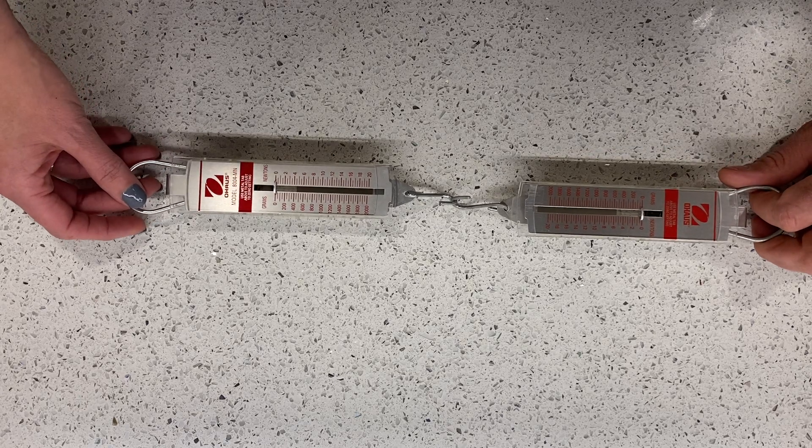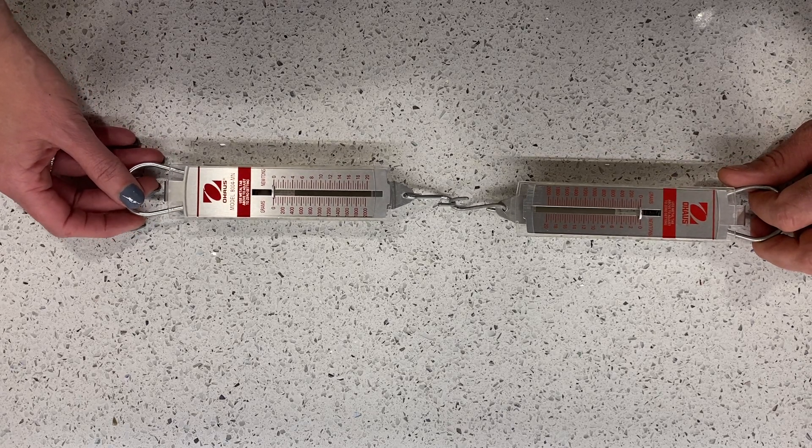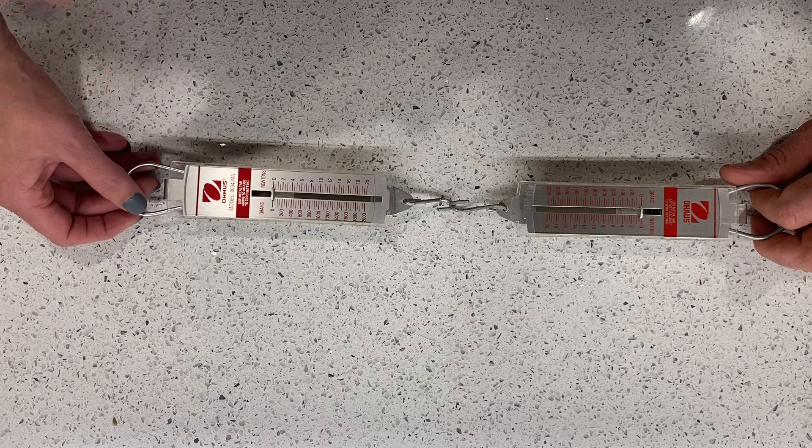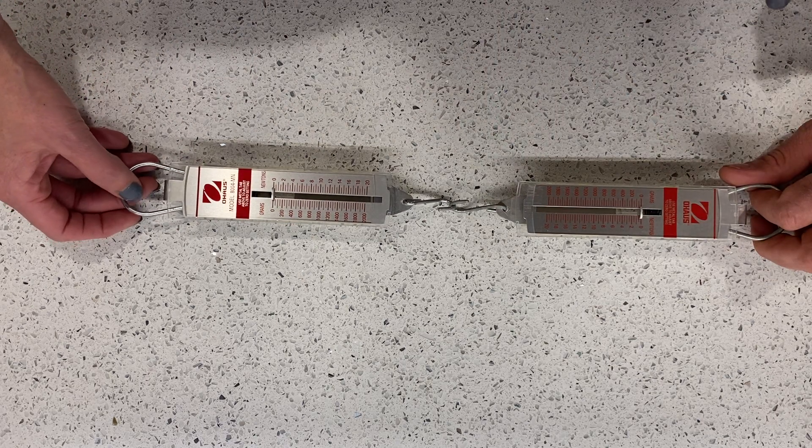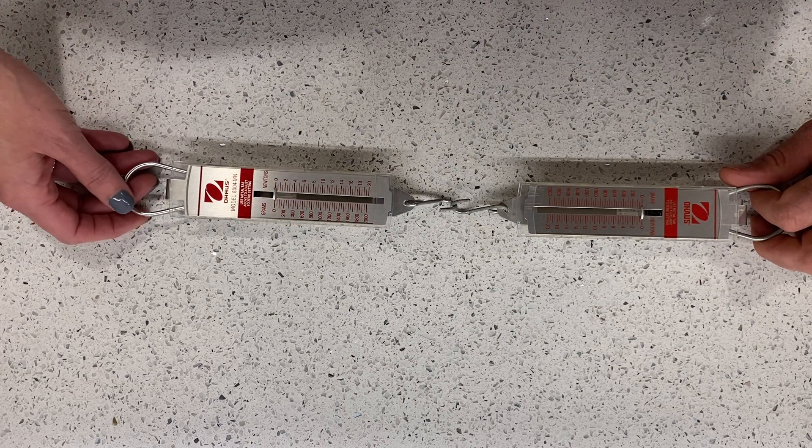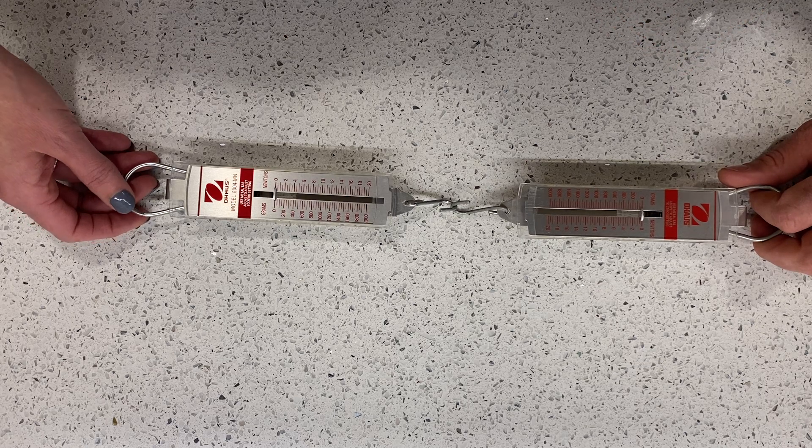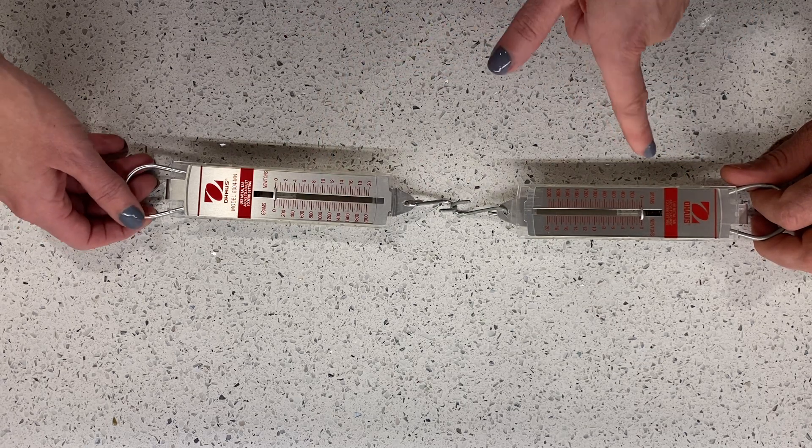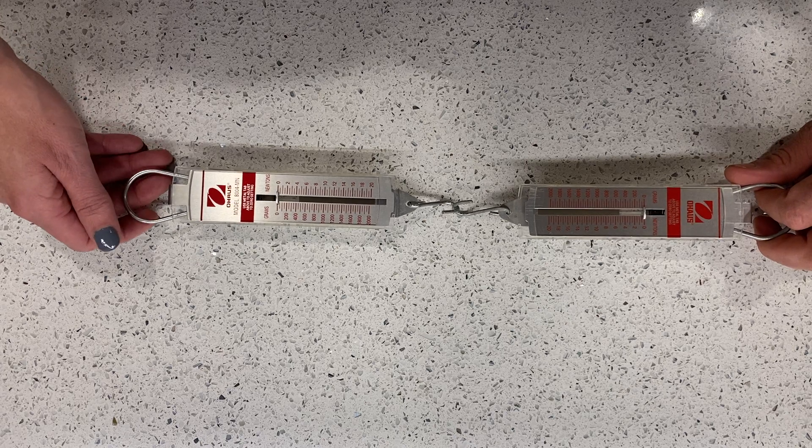Okay, I've got two spring scales hooked together, and we're going to pull on them differently, more on my side, more on my assistant Mr. Cadigan's side, together. And for each of them, we're going to read the scale to see how many newtons of force we're reading.